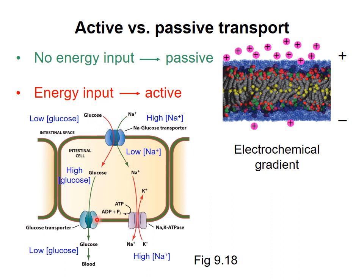At the bottom left is a transporter that passively allows glucose to move down its concentration gradient into the bloodstream. This concludes the series of videos on lipids and biological membranes.